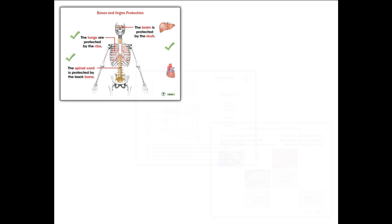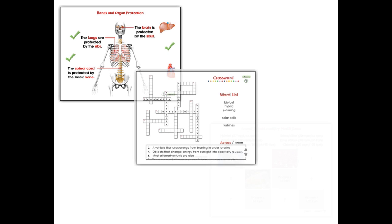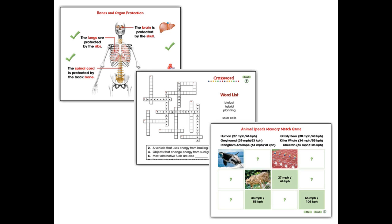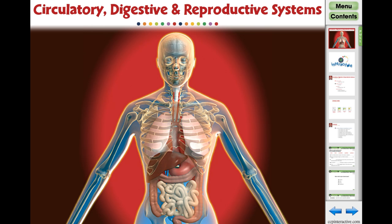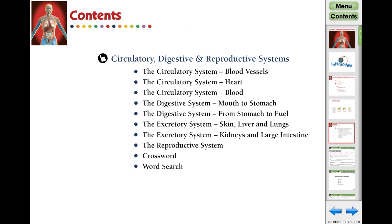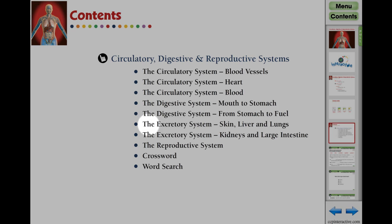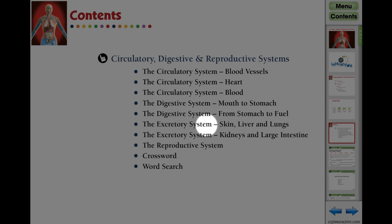Our highly interactive and engaging curriculum-based lesson plans inspire student interaction and are ideal for differentiated learning. Circulatory, Digestive, and Reproductive Systems — the third of three interactive digital lesson plans in the Human Body series. Our 80-screen interactive lesson features comprehensive interactive activities covering topics such as blood, the excretory system, and the reproductive system.